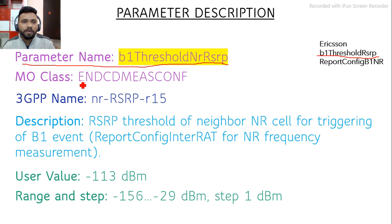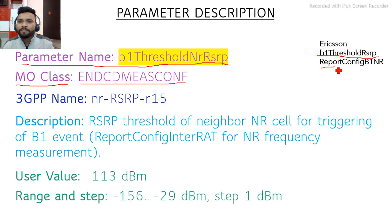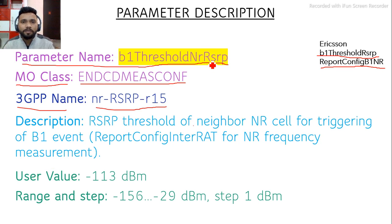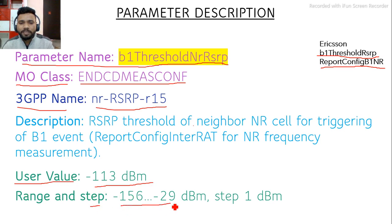In Nokia, this parameter belongs to the MO class ENDCmeansConfig, and in Ericsson it belongs to the MO class ReportConfigB1NR. As per 3GPP, B1 Threshold NRRSRP is named NRRSRP in Release 15. This parameter is used for IRAT handovers. The default value is minus 113 dBm and the range is minus 156 to minus 29 dBm, with changes made in steps of 1 dBm.